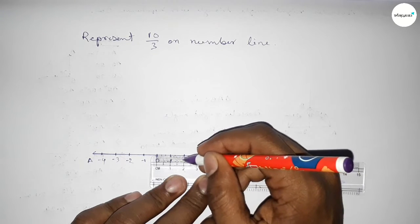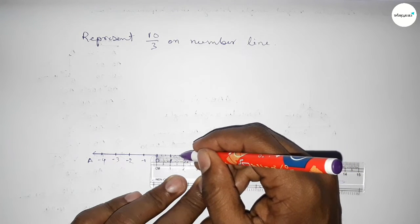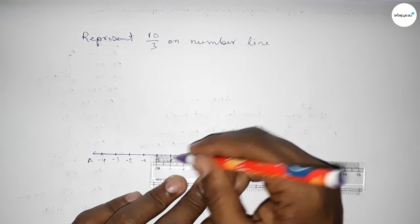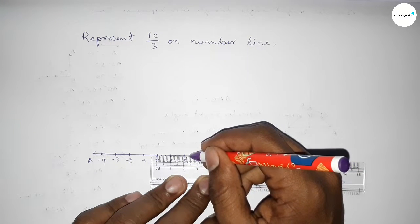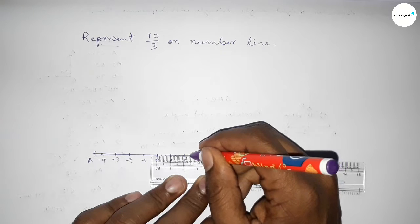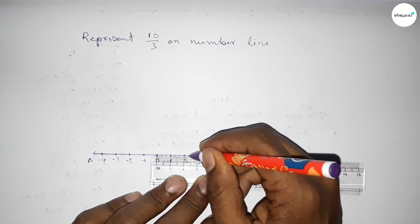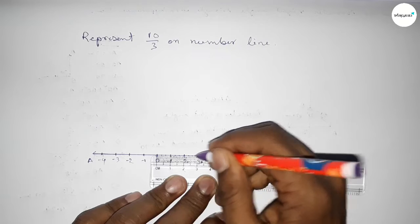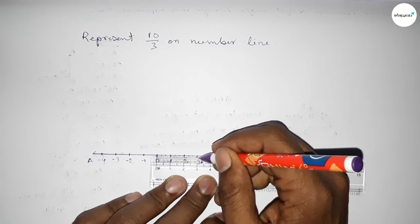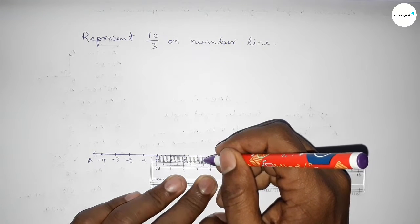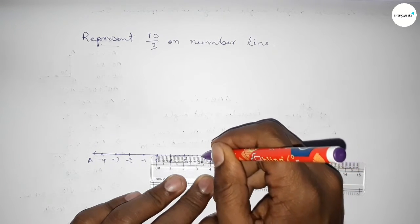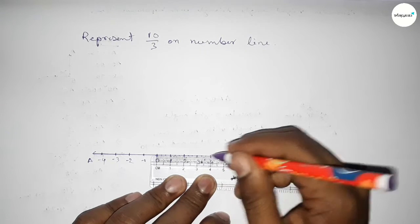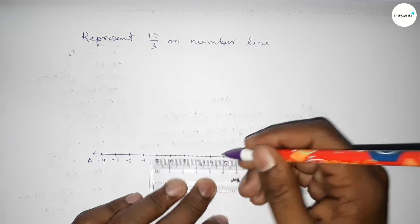Again, divide the distance between three and four into three parts approximately — 0.33 approximately and 0.67 approximately. By this way we can divide the distance between any two numbers into three equal parts approximately.